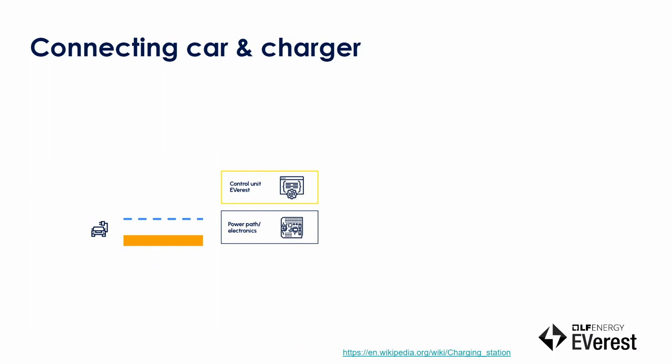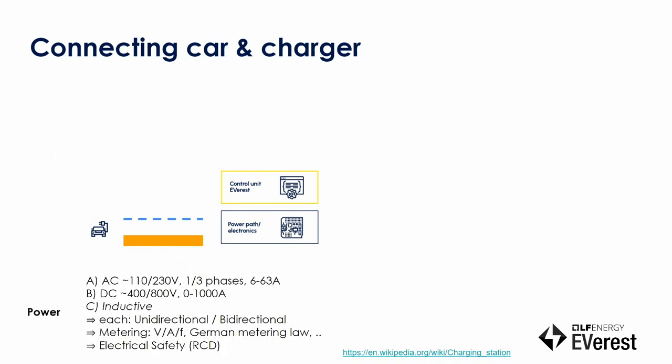You basically start with the charging station. There's a controller, let's say a Raspberry Pi, there's some power electronics, and there's a car connected — a data link and a power link. Power could be different versions: AC, voltage is different in every region, number of phases is different, the amps are different. You can also go DC or inductive charging. So a lot of ways of transferring power.